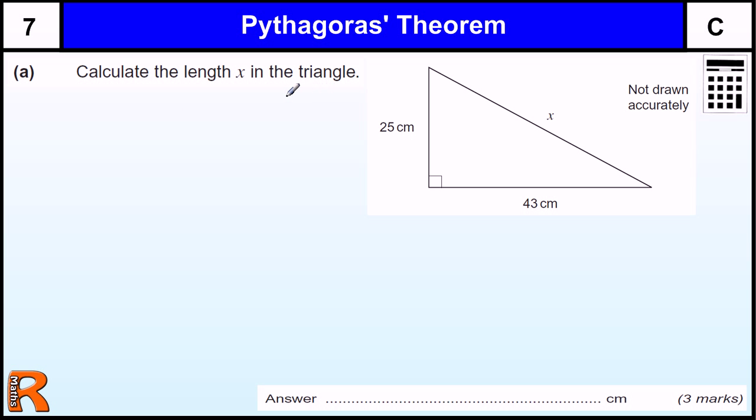Calculate the length of X in the triangle. If you have a right-angled triangle and one of the sides is missing, you've got two sides and one's missing, you need to use Pythagoras' Theorem which states that the square of the hypotenuse is equal to the sum of the squares of the other two sides.